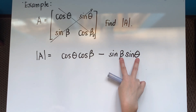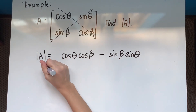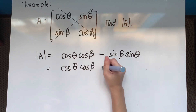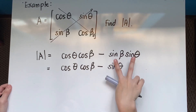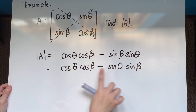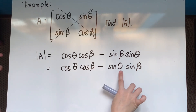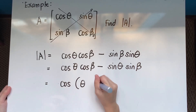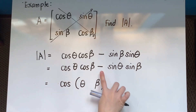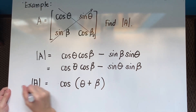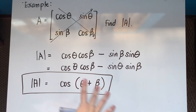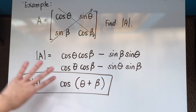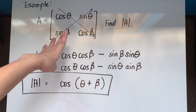Notice that we have two angles — theta and beta — in the pattern cos·cos − sin·sin. Since multiplication is commutative, we can rearrange. Recognizing the cosine addition identity, cos·cos − sin·sin equals cosine of the sum of the two angles. So the determinant of A simplifies to cosine of (theta + beta).